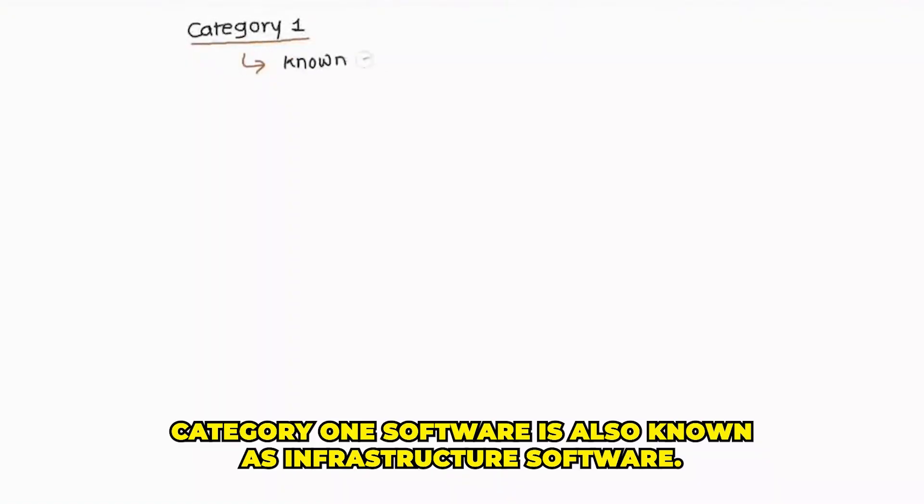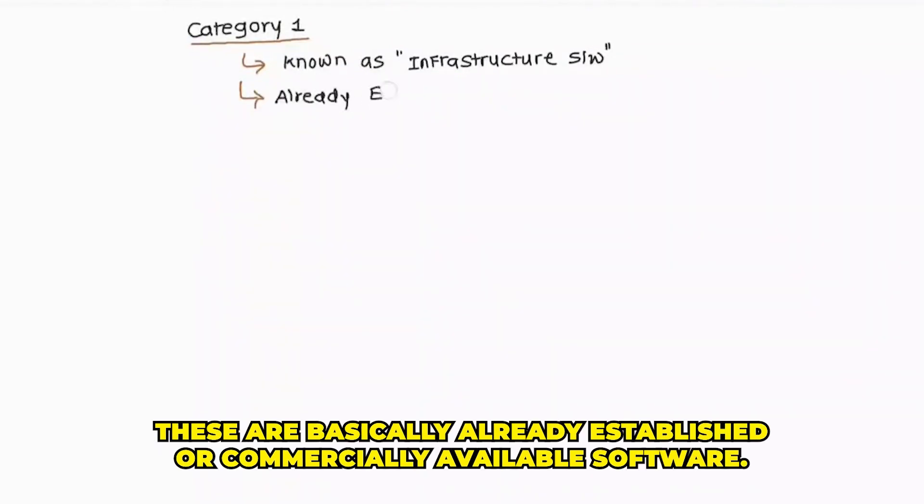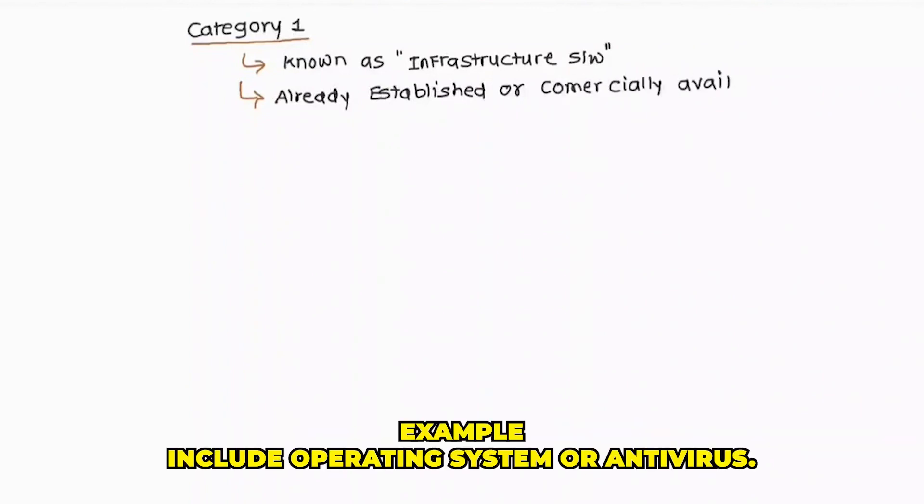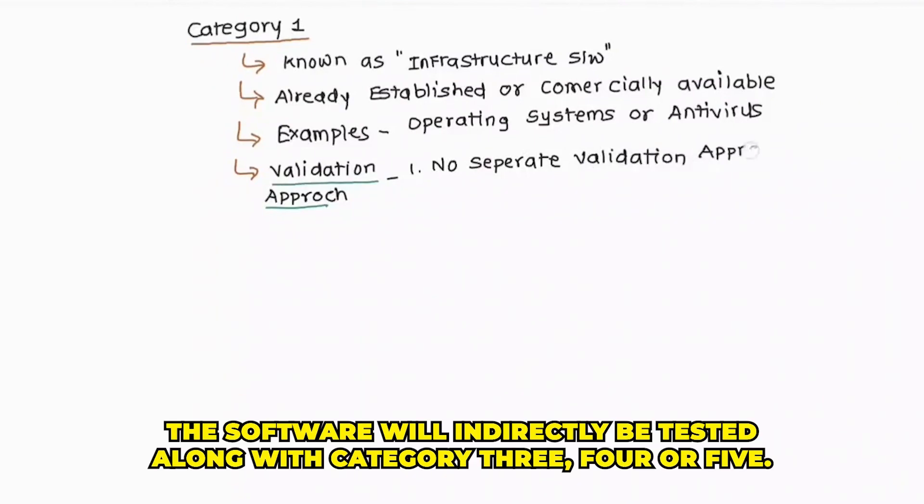Let's see one by one what these software categories are. First is category 1. Category 1 software is also known as infrastructure software. These are basically already established or commercially available software. Examples include operating systems or antivirus. There won't be any different validation approach for this category. Instead, the software will indirectly be tested along with category 3, 4, or 5.